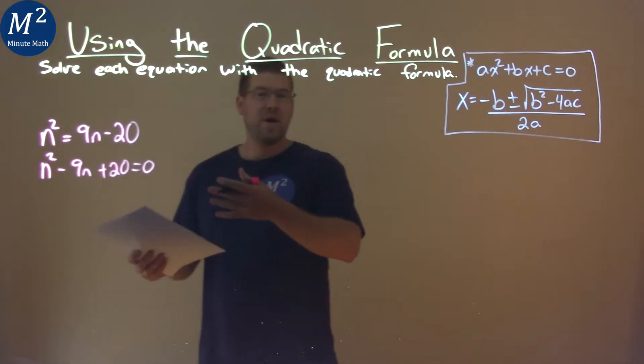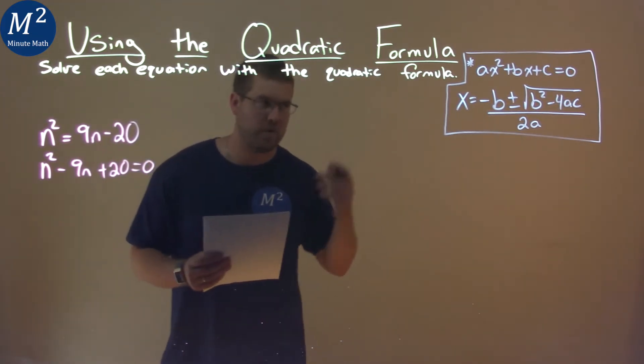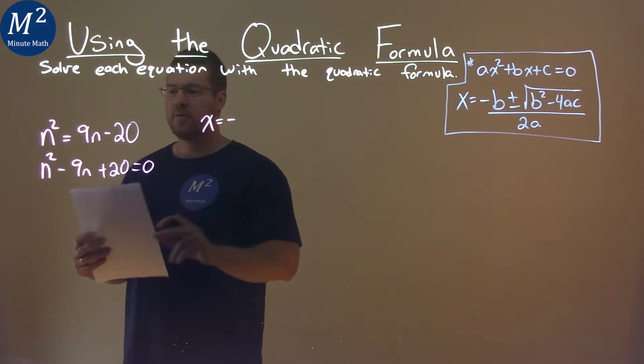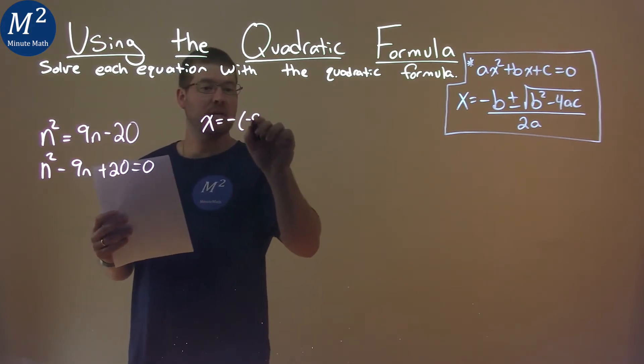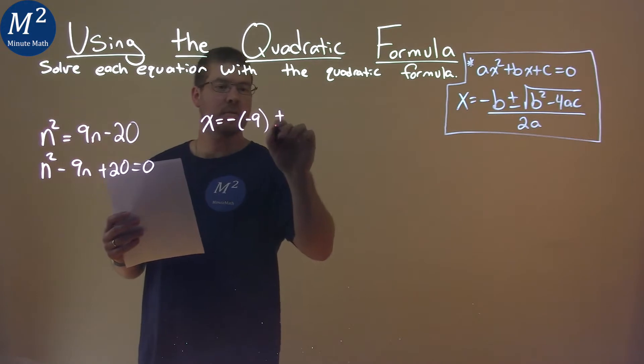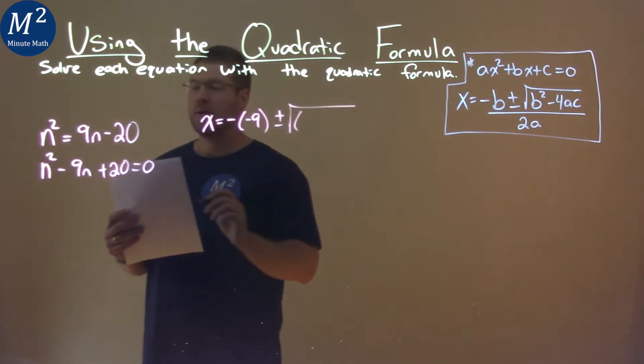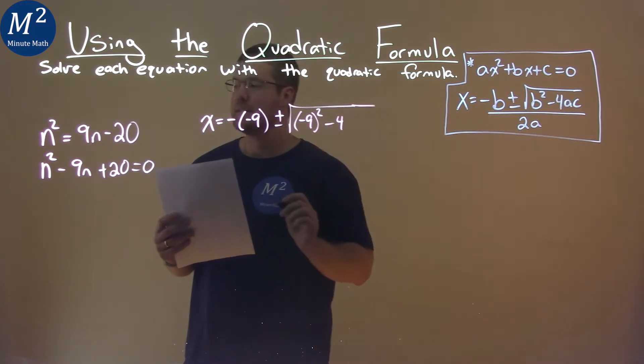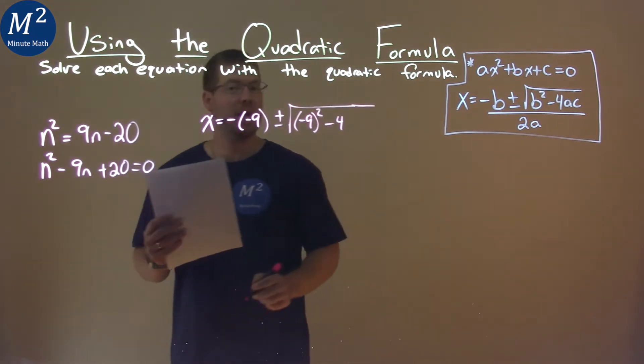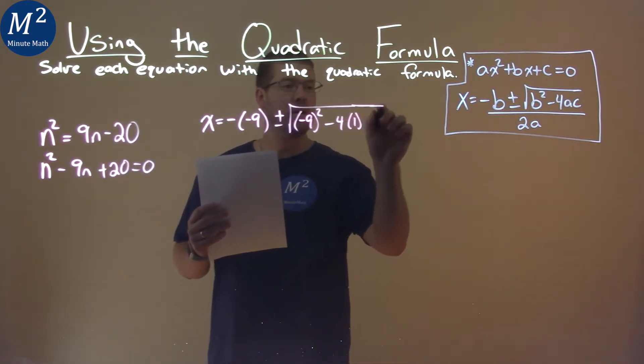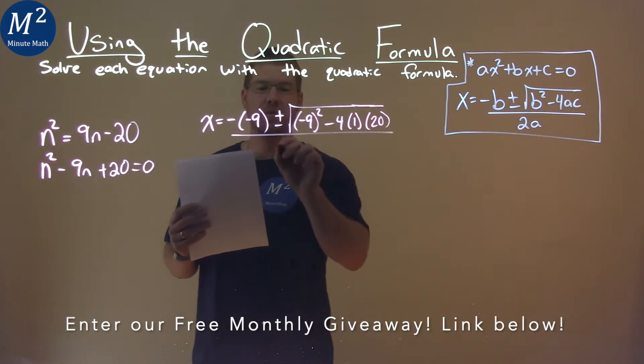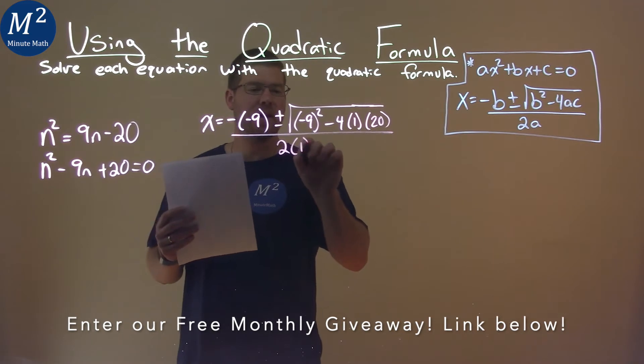Well now that we have a quadratic equal to 0, we can use the quadratic formula. Plug it in. x equals negative b value, which is negative 9, don't forget the double negative, plus or minus the square root, b squared, so negative 9 squared, minus 4 times a, coefficient in front of n squared which is 1, times c which is 20, all over 2 times a, a again being 1.